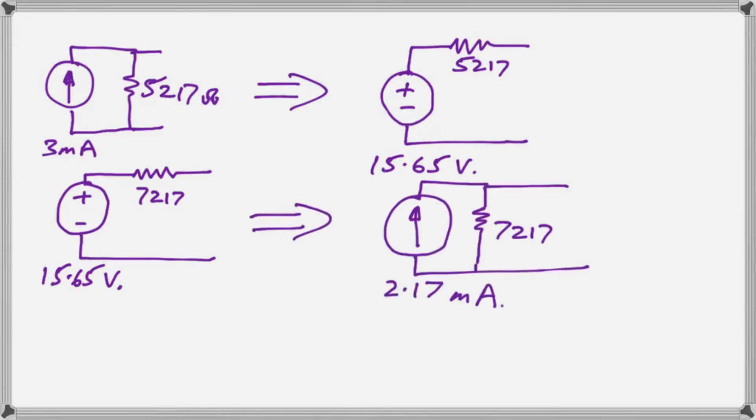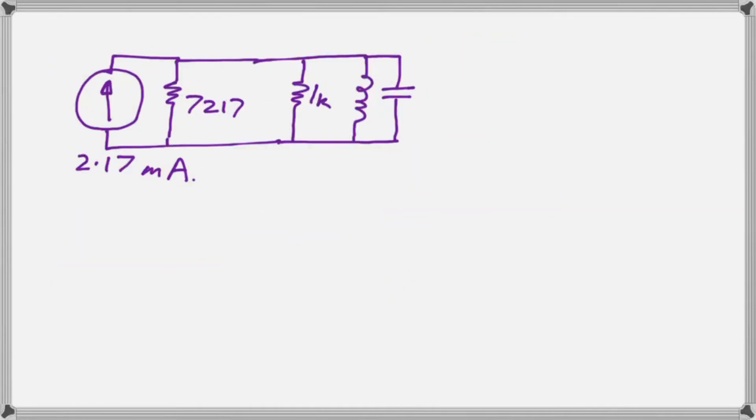And we now want to put that into a Norton circuit again. So we put our 7,217 Ohm resistor into across our 2.17 milliamp current source. There is our final circuit that we have broken it down to. We have our Norton equivalent circuit on the left and then we have finally reached our resonant tank circuit. We have a coil, a capacitor and a resistor all in parallel. So we have a parallel RLC circuit staring us in the face.